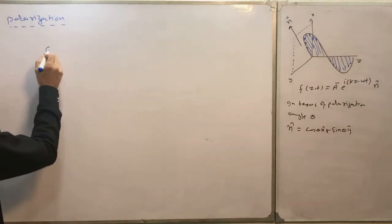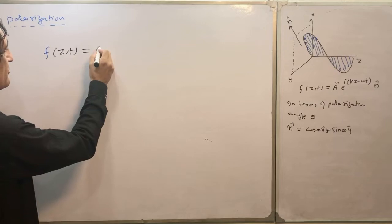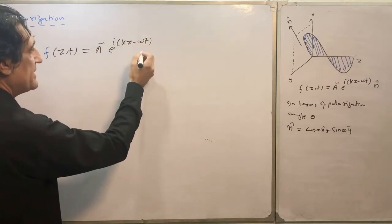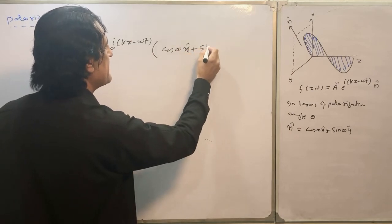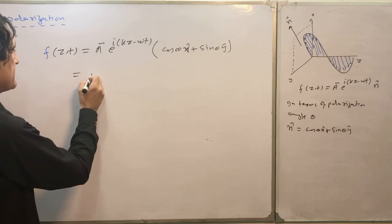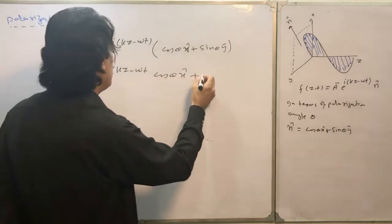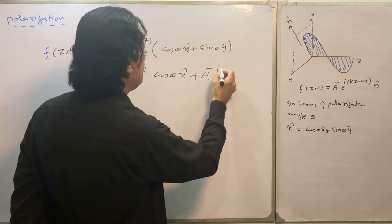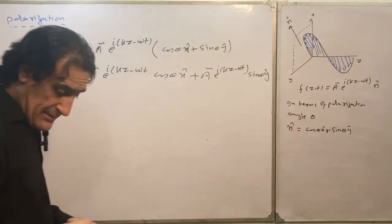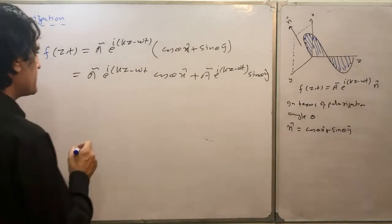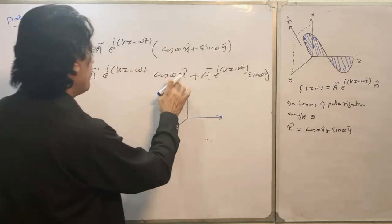So the field E(z,t) = A e^(iota(kz − ωt)) · n̂, where n̂ = cos θ x̂ + sin θ ŷ. Expanding this gives A e^(iota(kz − ωt)) cos θ x̂ plus A e^(iota(kz − ωt)) sin θ ŷ. This wave makes an angle theta with respect to the axes.